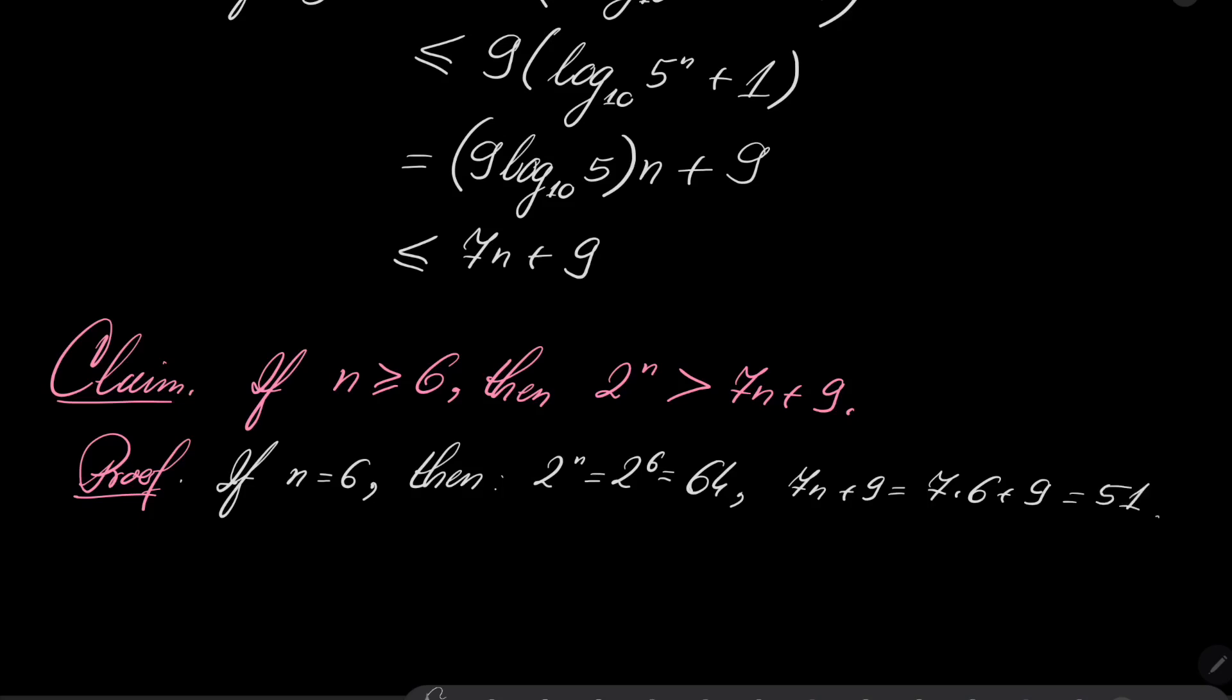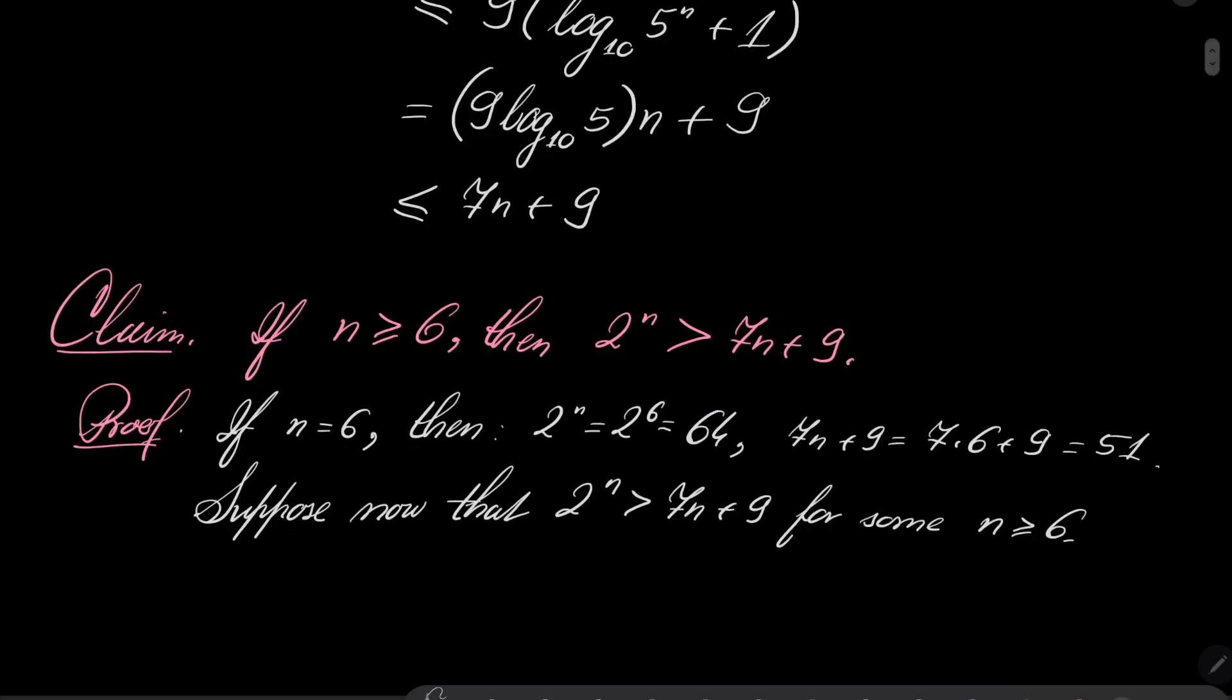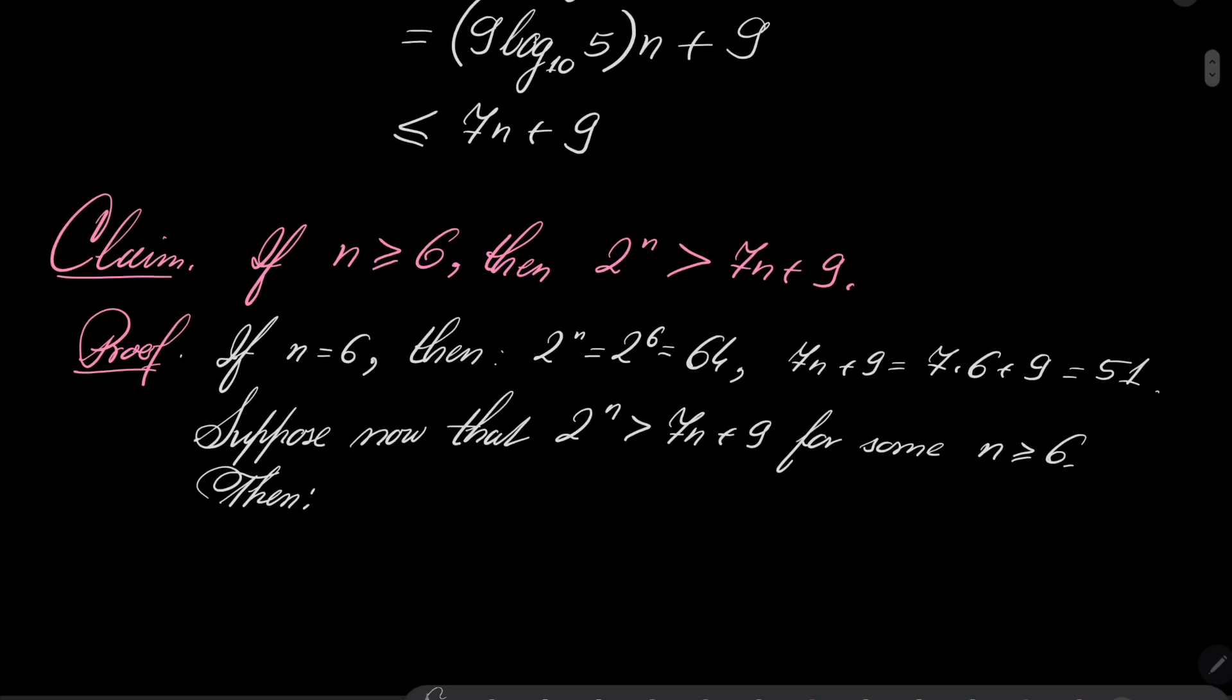Now suppose, let's suppose now that 2 to the power of n is greater than 7n plus 9 for some n greater than or equal 6. Notice that then we have the following. 2 to the power of n plus 1 is 2 times 2 to the power of n, which is greater than by our assumption 7n plus 9.